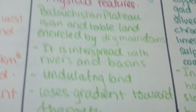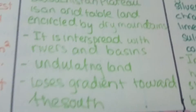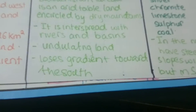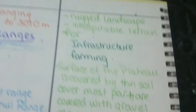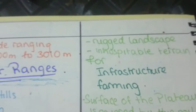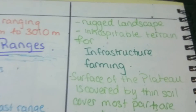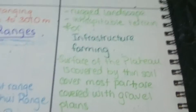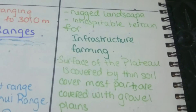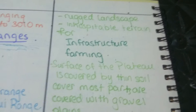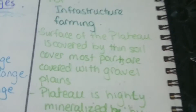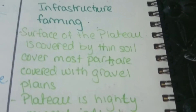The Balochistan Plateau is a tableland encircled by dry mountains, interspersed with rivers and basins, with undulating land and a loose gradient towards the south. It has a rugged and inhospitable terrain that makes infrastructure and farming very difficult.